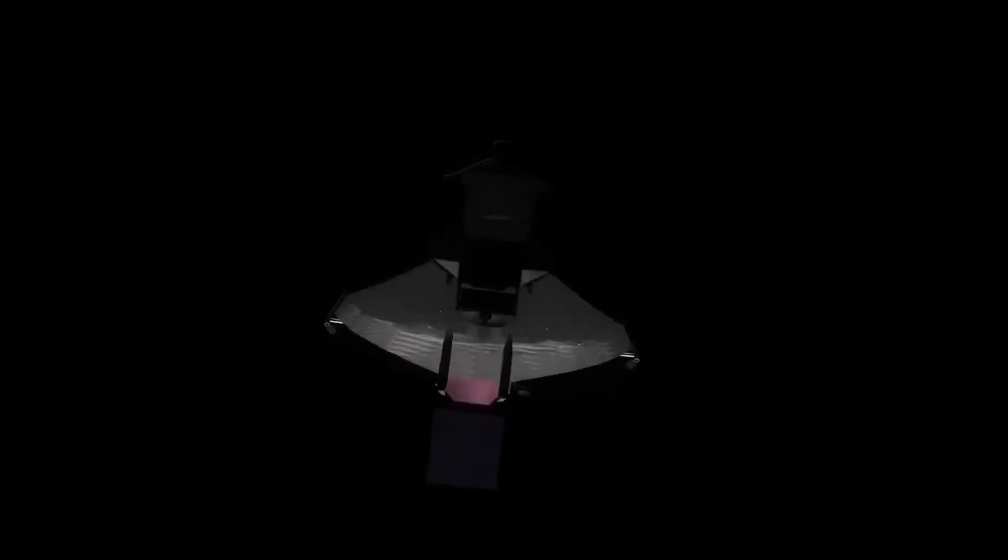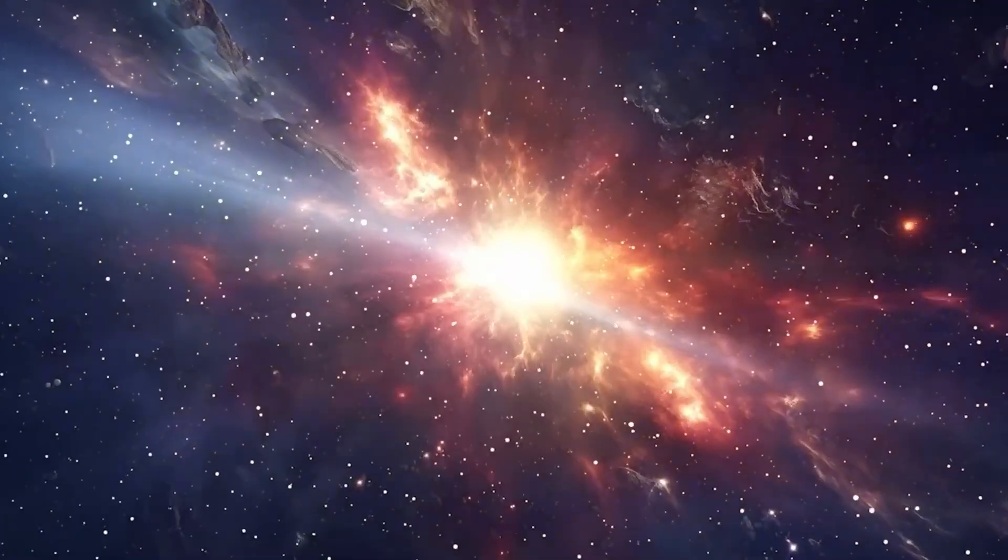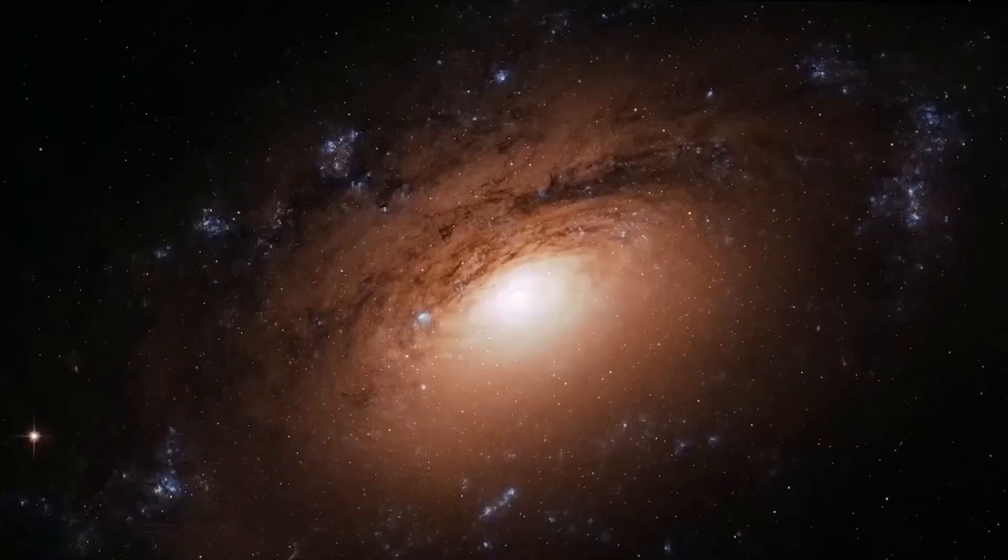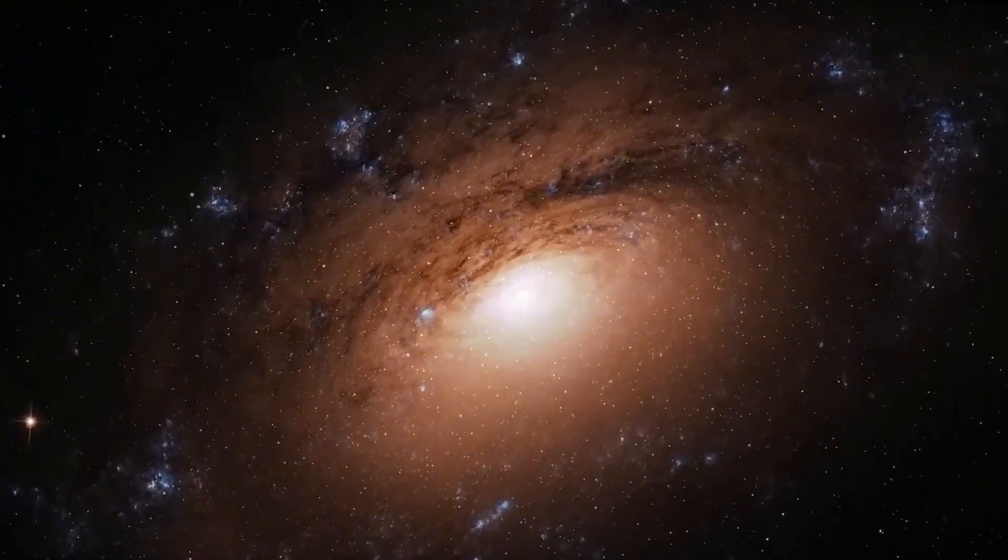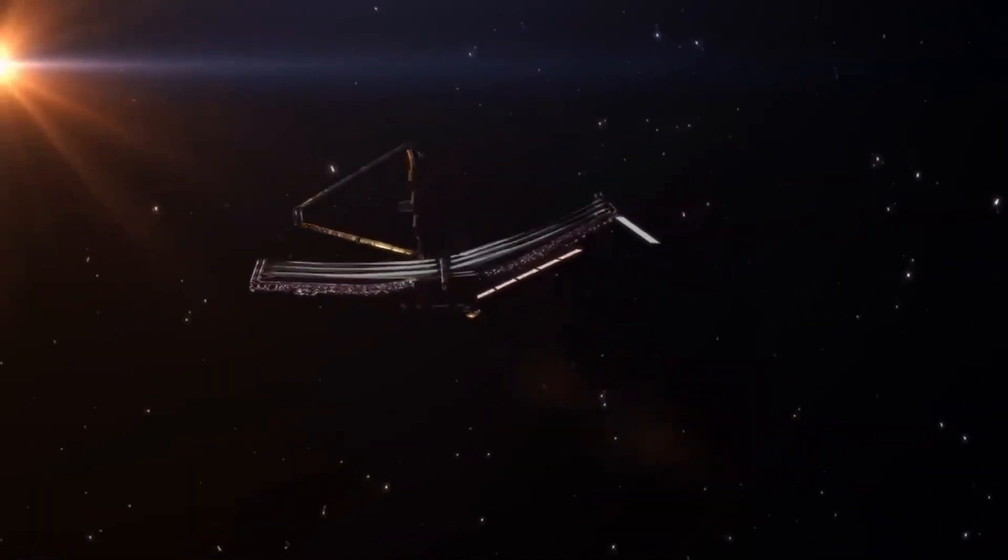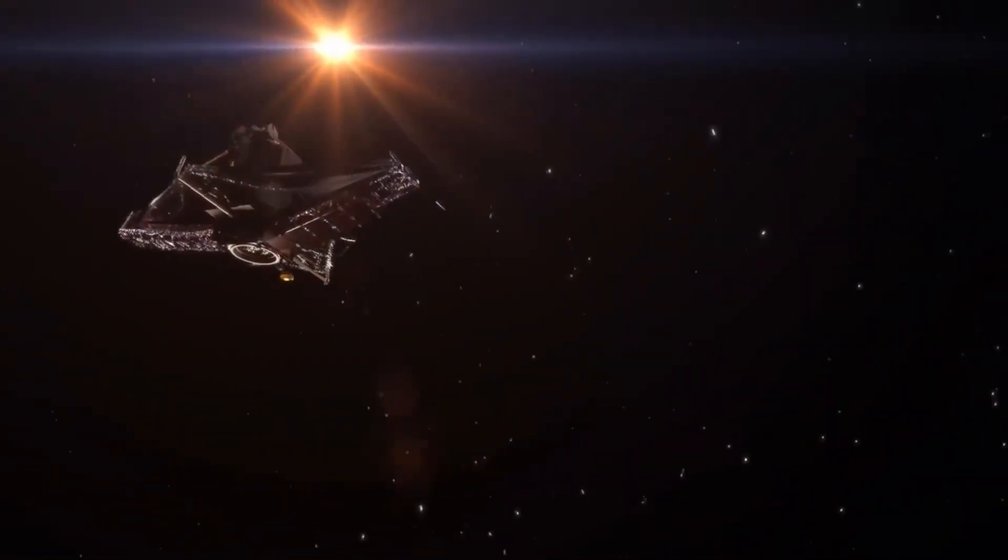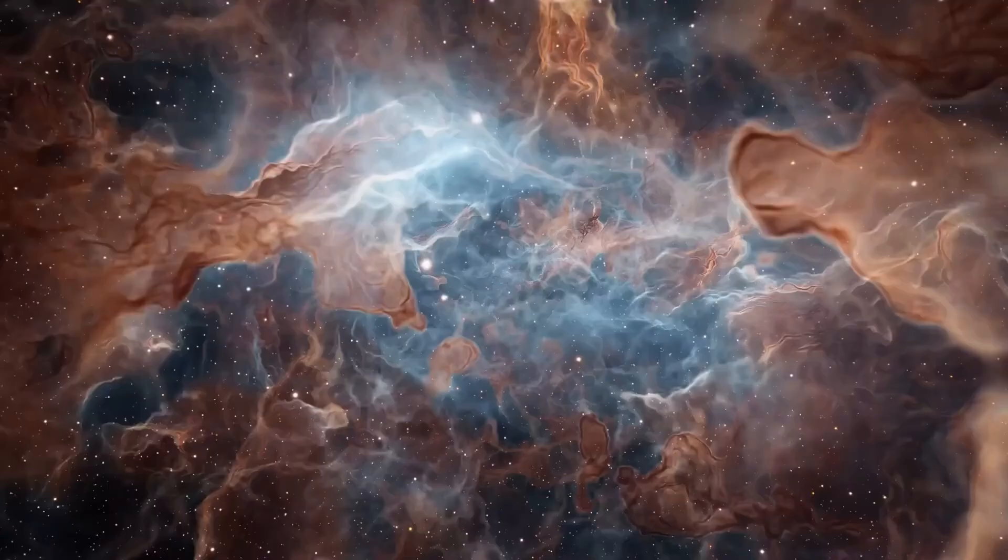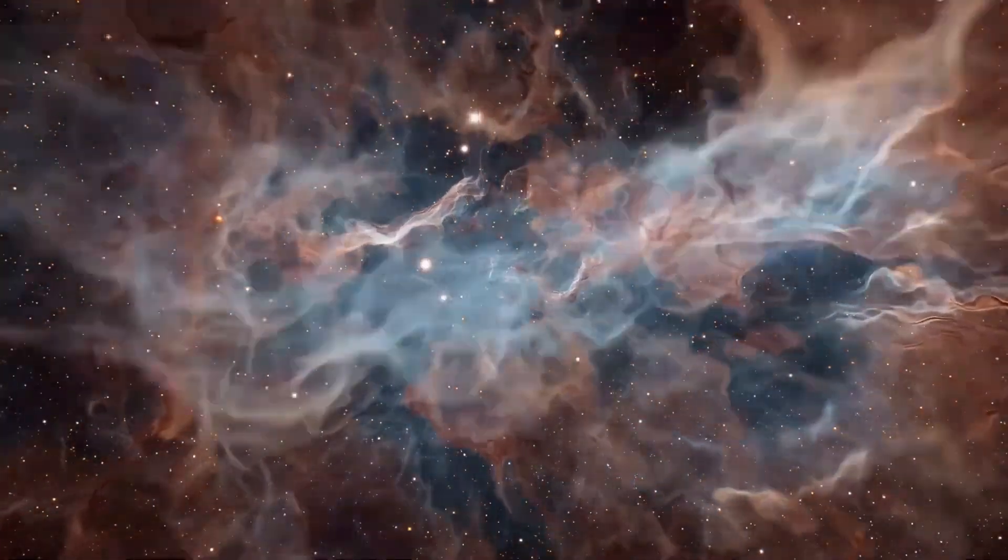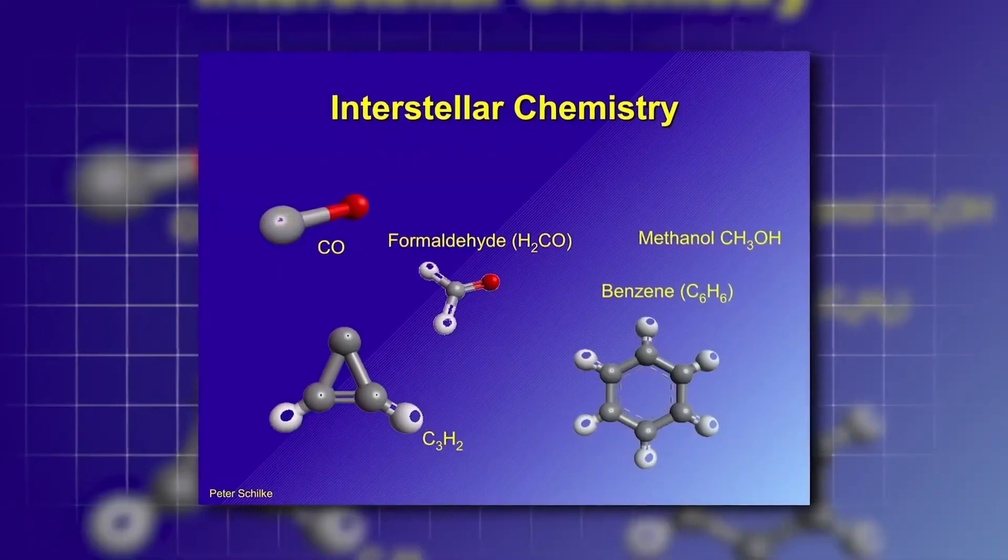While the anomaly around Neptune stirred unease, what James Webb found in the TRAPPIST-1 system was enough to make scientists reconsider their entire approach to exoplanetary science. TRAPPIST-1, located just 39 light-years away, is already famous for hosting seven rocky planets, three of which orbit within the system's habitable zone.